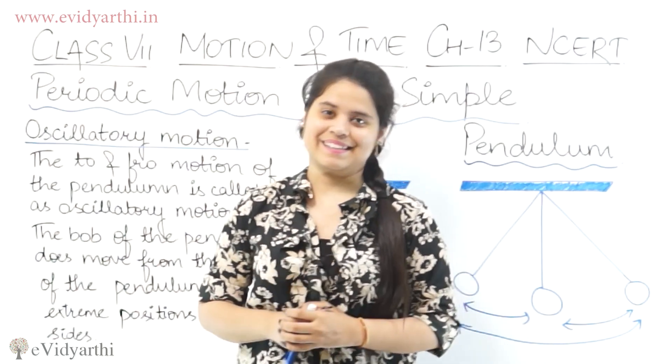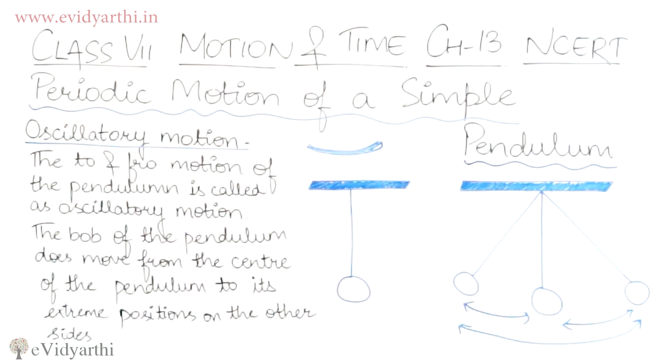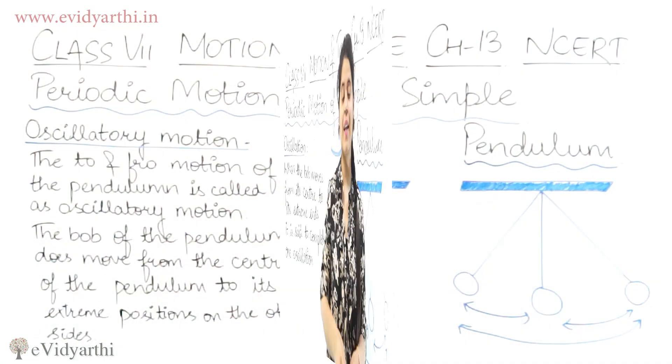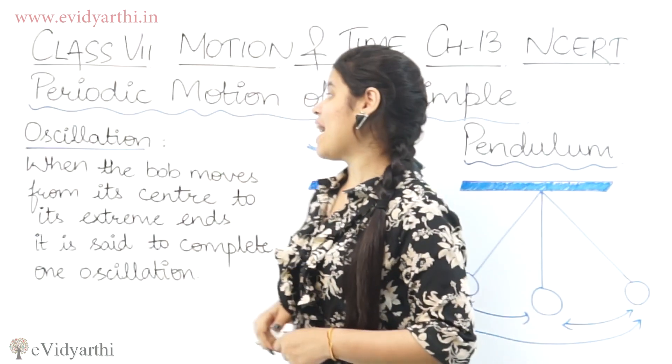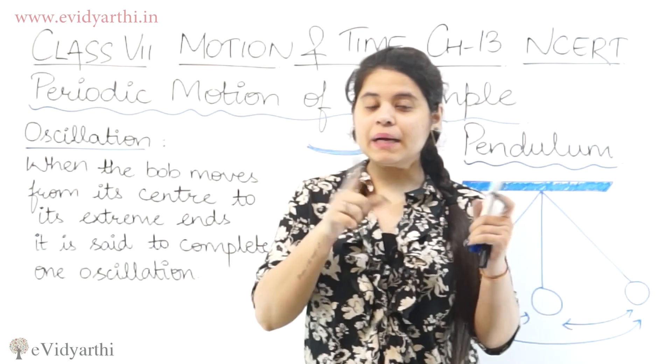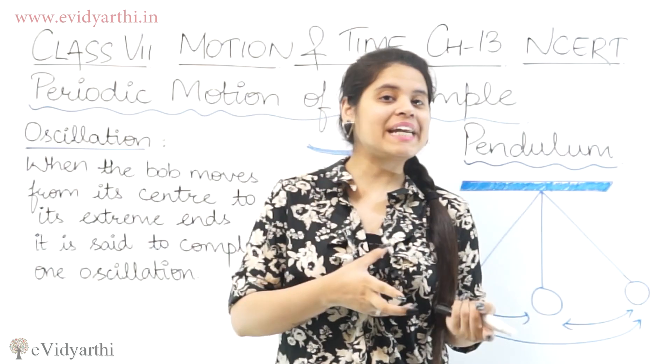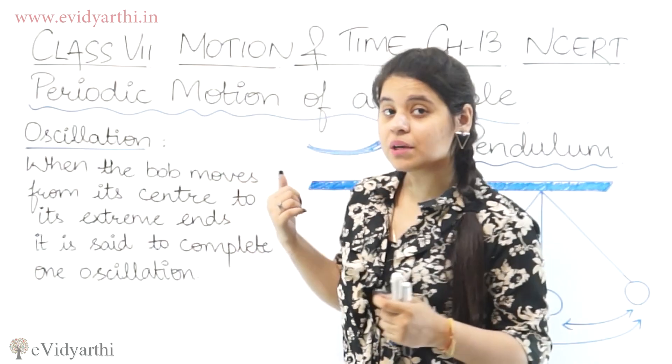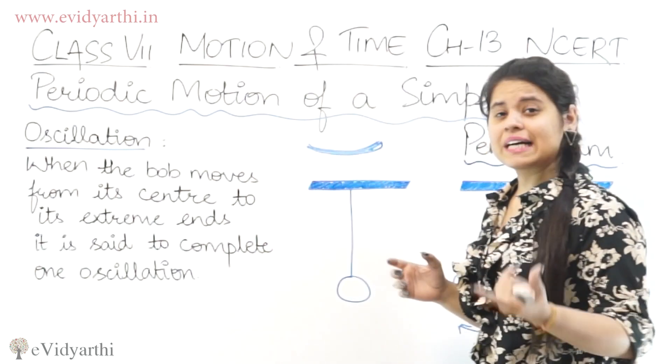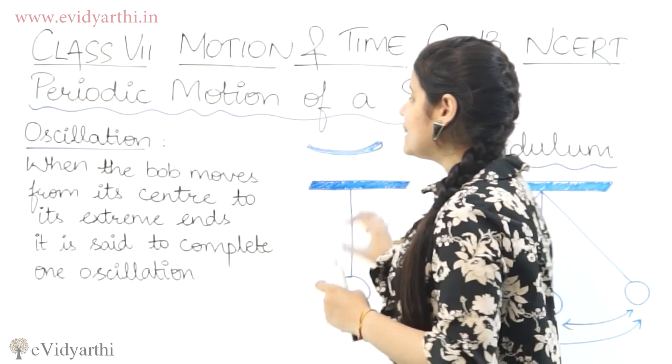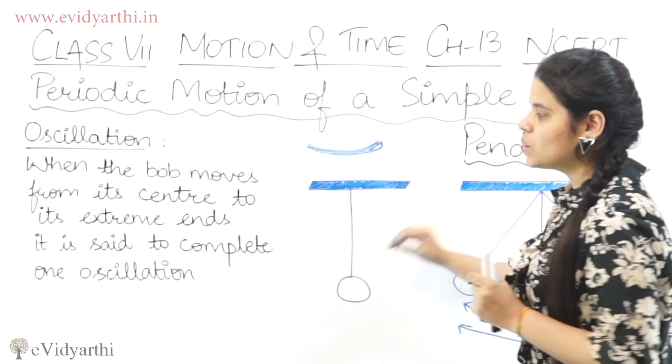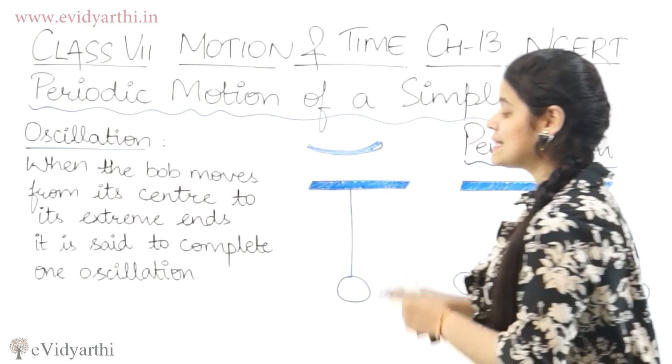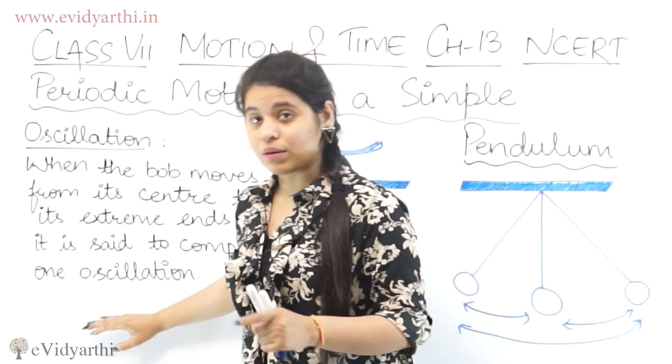Now the next word we have is oscillation. We just learned about oscillatory motion. Now we are talking about the term oscillation. Again it's very simple. When the bob moves from its center to its extreme edge, it is said to complete one oscillation.